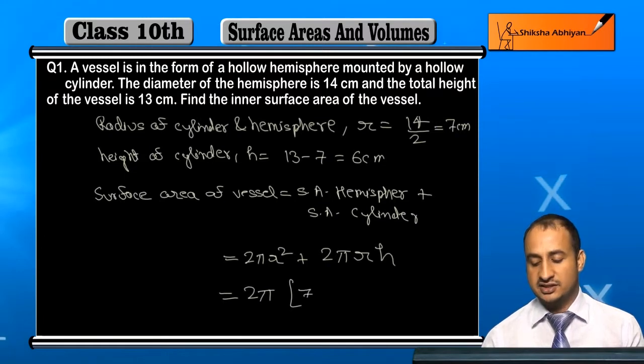r², what is the radius? 7 into 7, plus r into h, which is 7 into 6.